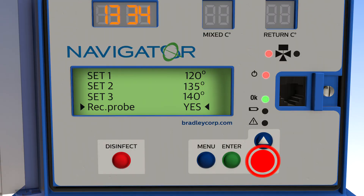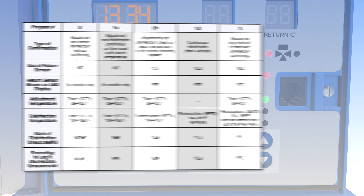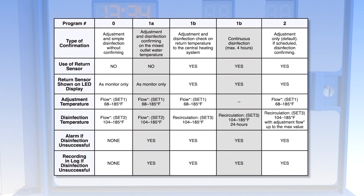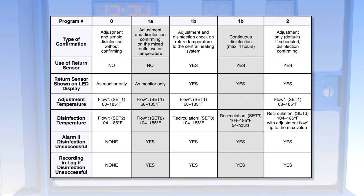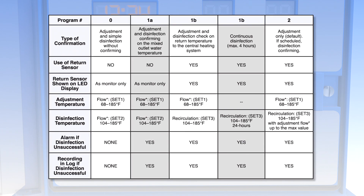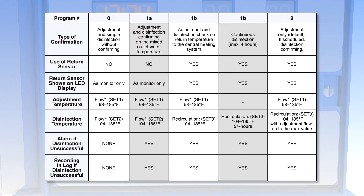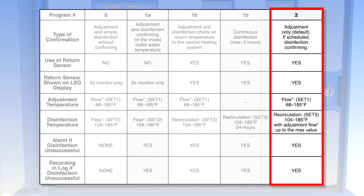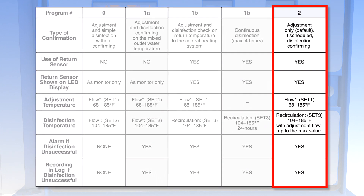The next setting you'll come to is program. There are four different programs you can set for thermal disinfection, each with different parameters. Refer to the instruction manual to learn the differences for each program. Program 2 is the default and works best for the large majority of applications.